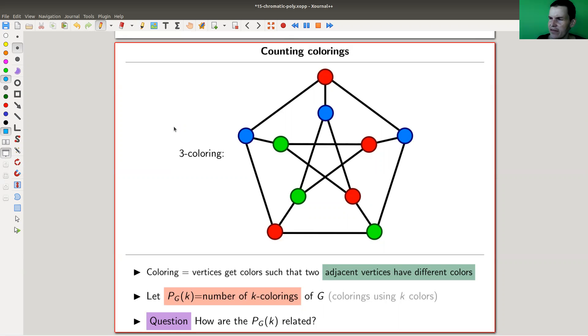We want to count colorings. And the coloring is just to give each vertex a color. So in my picture here, I have blue, I have green, and I guess the remaining one is red. So it's a three coloring.